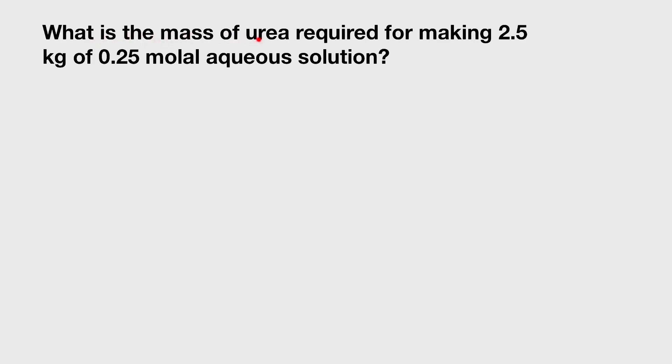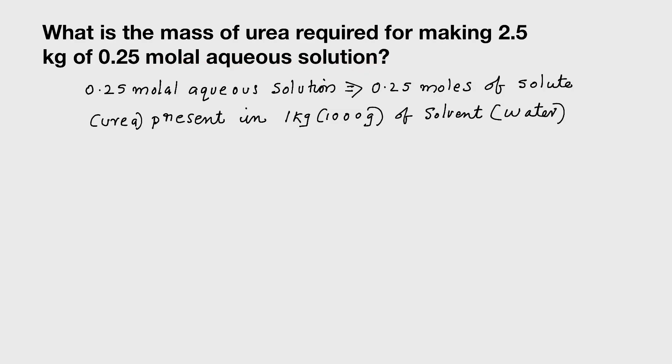What is the mass of urea required for making 2.5 kg of 0.25 molal aqueous solution? For doing this question, you must know the exact meaning of 0.25 molal aqueous solution. It means 0.25 moles of solute - what is solute? Urea is present in 1 kg of solvent.